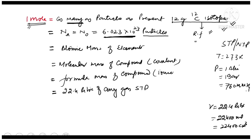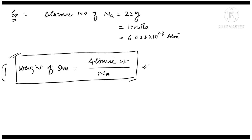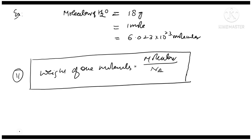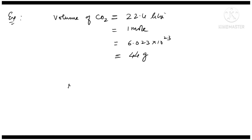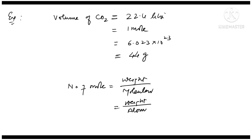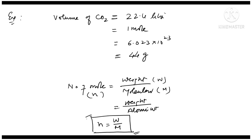So this is the summary with which we can solve 2000 questions. The first formula: weight of one atom = atomic weight / Avogadro's number. The second formula: to calculate the number of moles — n = W/M, where W is the given weight and M is the molecular weight (for molecules) or atomic weight (for elements). This formula n = W/M is what we will use up through 12th class. This is the mole concept, and in the next video we will see some problems on this. Thank you so much.